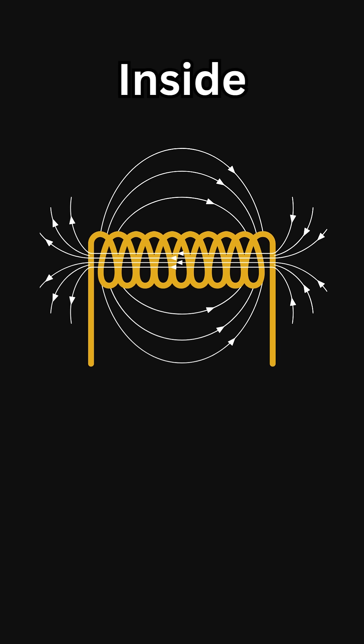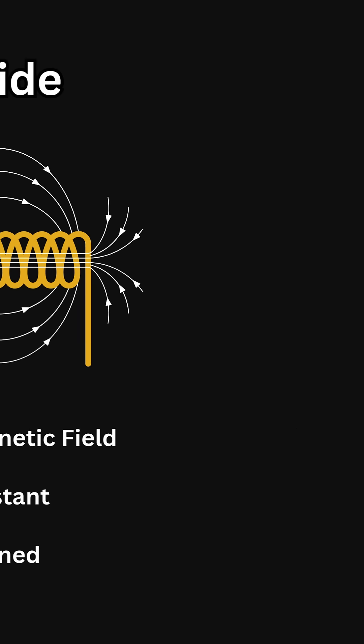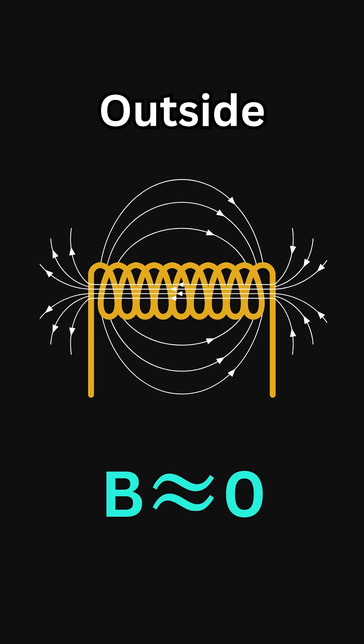Inside the solenoid, the magnetic field is strong, uniform, and perfectly aligned. On the outside, almost nothing—the field fades away into weakness.